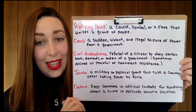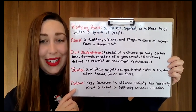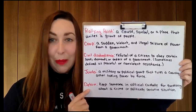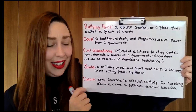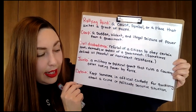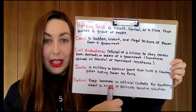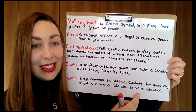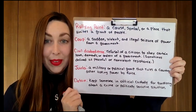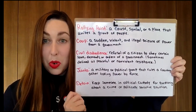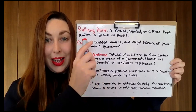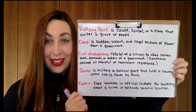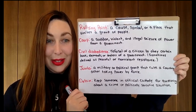And then we have the last one, probably the easiest one: 'detain.' You'll hear this word if you read the news or watch police TV shows. Detain means to keep someone in official custody — usually the police will keep you somewhere for questioning about a crime or a politically sensitive situation. So detain means they will keep you somewhere and usually question you. So: rallying point, coup, civil disobedience, junta, and detain. I hope these words are understandable — if you have any questions, feel free to ask.